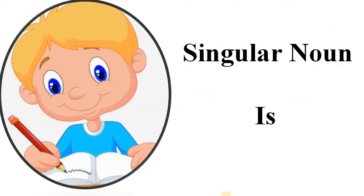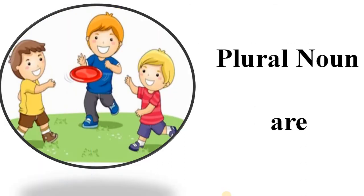Let me tell you — Ram is singular. So with singular, we use 'is'. And when there is more than one, that is plural, we use 'are'.